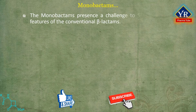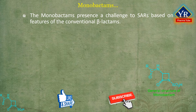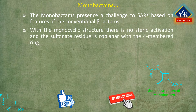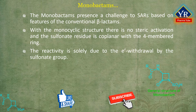The simple monocyclic structure of monobactams presents a challenge to structure-activity relationships based on features of conventional beta-lactams. Clearly, with the monocyclic structure, there is no steric activation and the sulfonate residue is coplanar with the 4-membered ring. The reactivity of the beta-lactam ring is solely due to electron withdrawal by the sulfonate group.